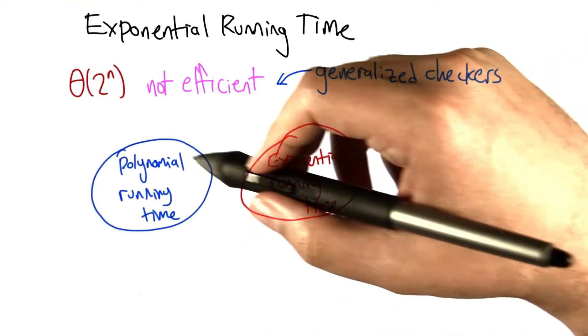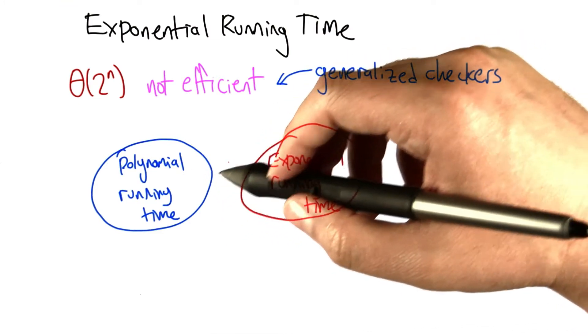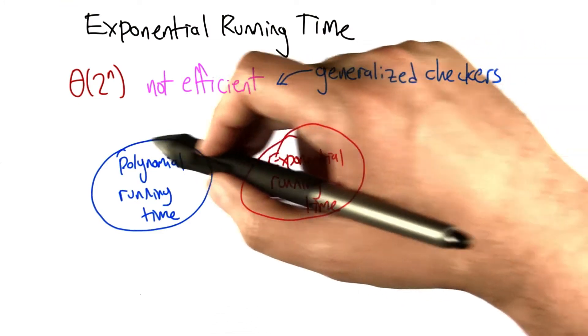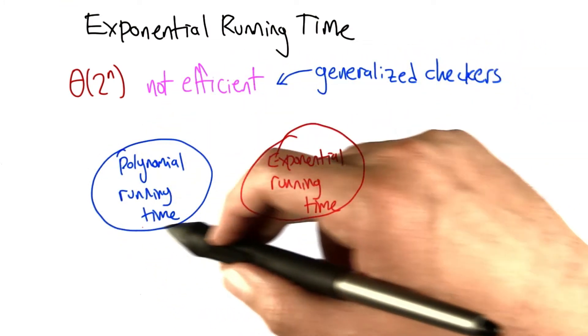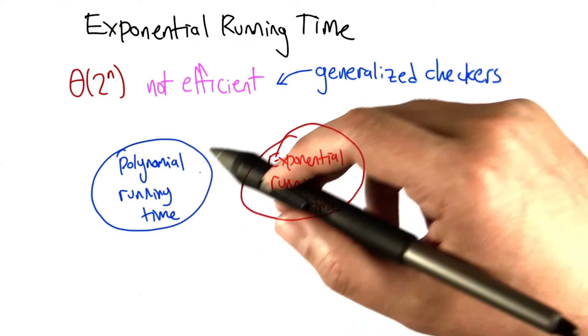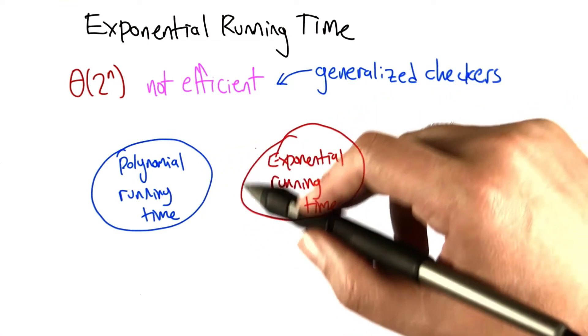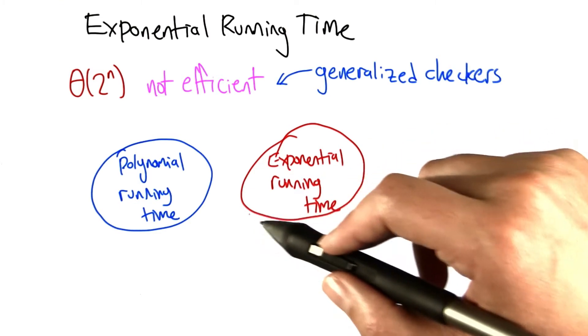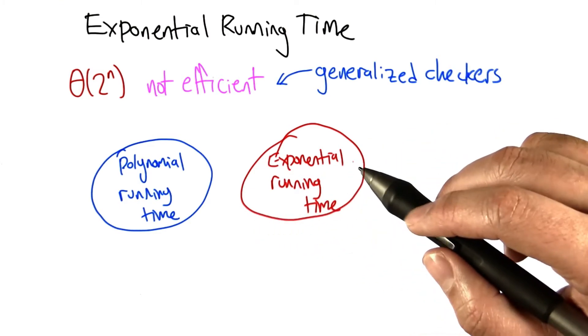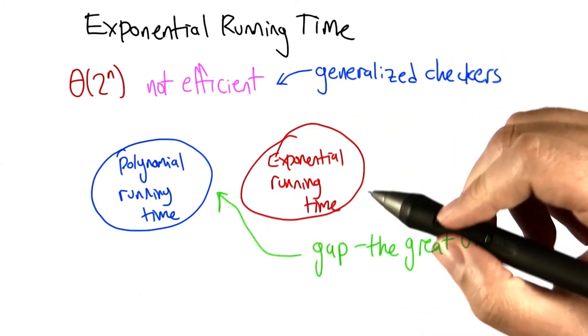But what I'd like to talk about is this funny gap between problems we know have efficient polynomial time solutions and problems we know do not have efficient solutions. The fastest algorithms for them have to take at least exponential time. But in between here, there's a gap.